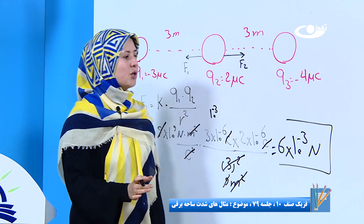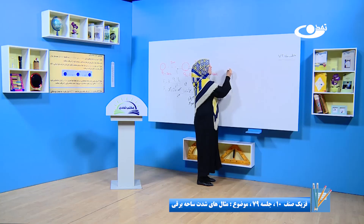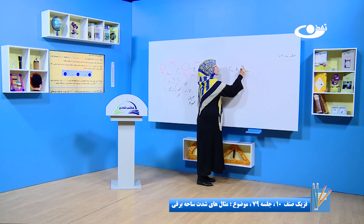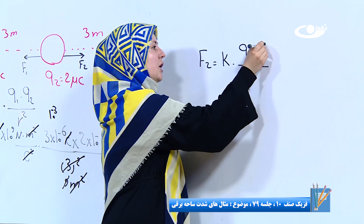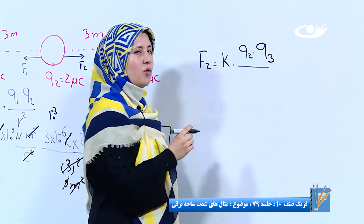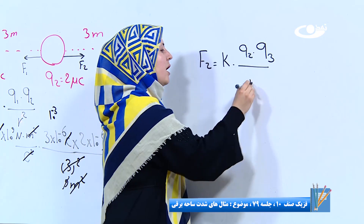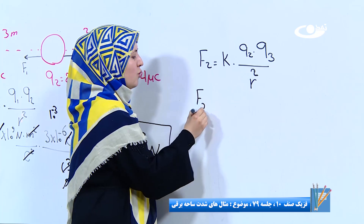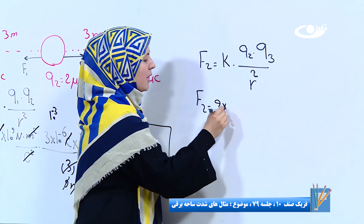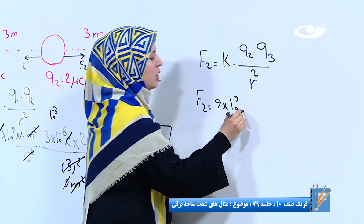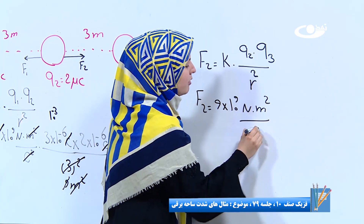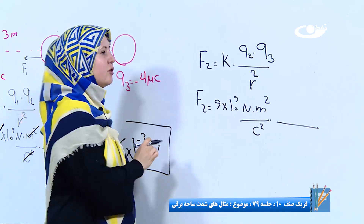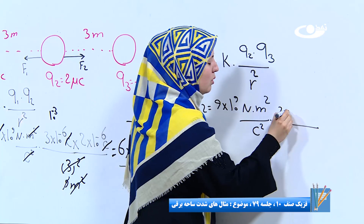حالی بیاین که ما هم دیگه مقدار قوه را پیدا کنیم. F2 مساوی هست با K ضرب Q2 ضرب Q3 بر روی R مربع. این بار هر دو ذره دو و سه برای ما مهمه. و فاصله هم مربع می‌شه. مقدار F2 برابر است با ۹ ضرب ۱۰ به توان ۹ نیوتن در متر مربع بر کولمب مربع. ضرب مقدار Q2 را برای ما چند گفته؟ دو.